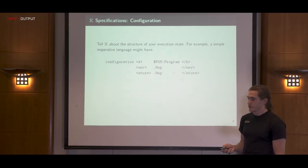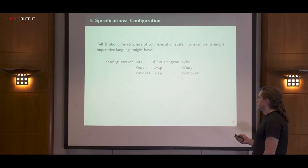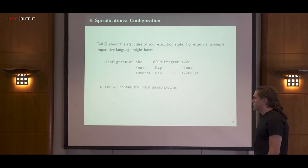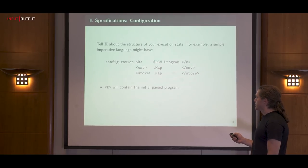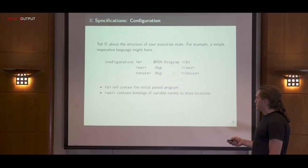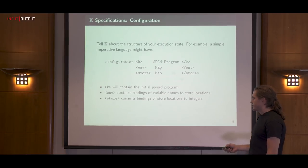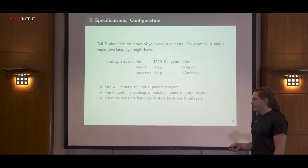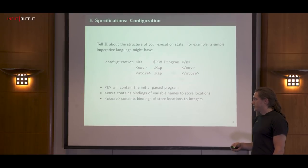You have to tell K a little bit about the structure of your state for your programming language. To do that, we declare what's called a configuration. The configuration here has three cells: the K cell which will contain the initial parsed program, the environment cell which contains bindings of all the variable names to their store locations, and the store which contains the values that the variables are bound to.